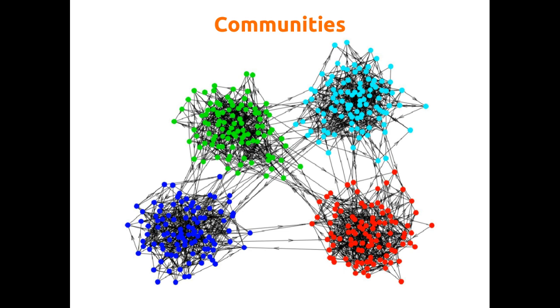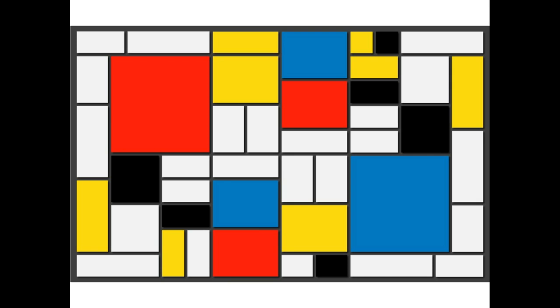You can also have the opposite: networks where communities interact weakly within and strongly between. This reminds me of Mondrian. In general, when people think of communities, they think of modules on the diagonals, but you can have groups of species or nodes that interact in a similar way with other groups.